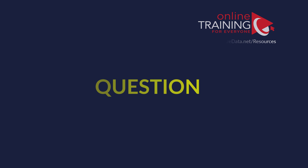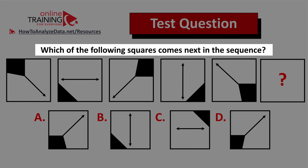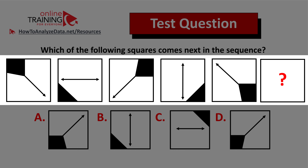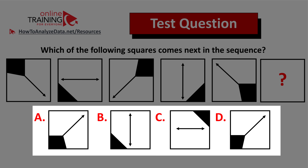Let me share with you a tricky question which tests your pattern recognition, reasoning, as well as analytical skills. Which of the following squares comes next in the sequence? You are presented with a sequence of six squares, and square number six is missing. You need to pick it out of four different choices — A, B, C, and D. As always, my recommendation is look for patterns. You can pause this video for 10 to 15 seconds to see if you can come up with the solution.